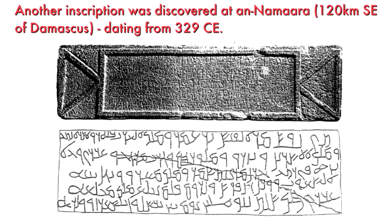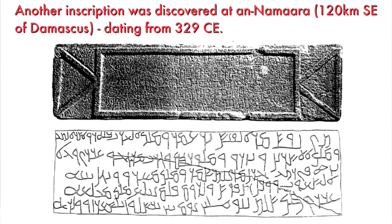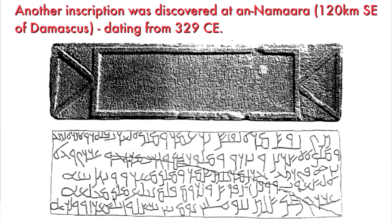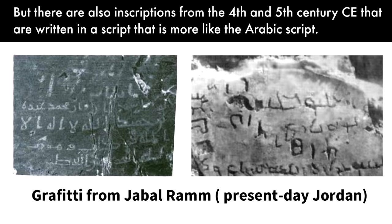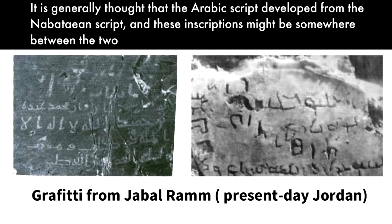Another inscription was discovered at En-Namada, 120 kilometers southeast of Damascus, dating back to 329 CE. The language of this inscription is nearly identical to Classical Arabic as we know it. Even though these inscriptions are unmistakably written in Arabic, they are not written in the Arabic script, but rather the Nabataean script, which derived from the Aramaic script. There are also inscriptions from the 4th and 5th centuries CE written in a script closer to Arabic, likely somewhere between Nabataean and Arabic.